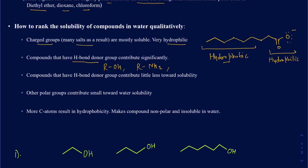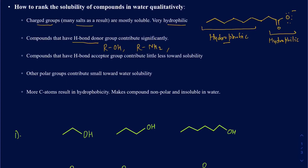Hydrogen bond acceptors also contribute to solubility, but they are a little bit less in terms of contribution compared to hydrogen bond donors. You can have a C=O bond or a C-N bond. As long as you have a nitrogen, oxygen, or fluorine in the molecule, it has the capability of making a hydrogen bond — for instance, water can make a hydrogen bond with that fluorine or nitrogen. But a hydrogen bond donor group contributes more toward solubility in water compared to hydrogen bond acceptors.